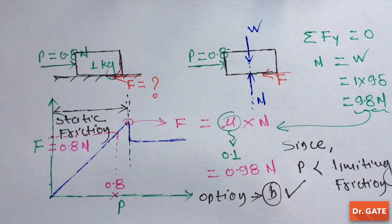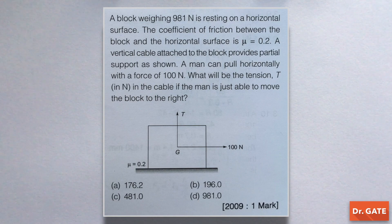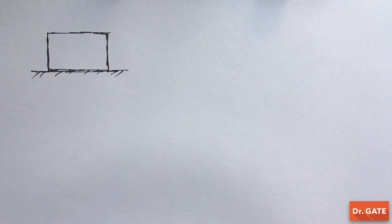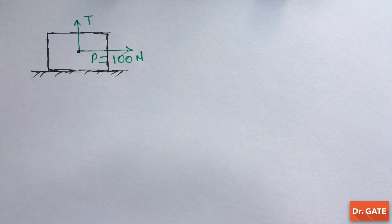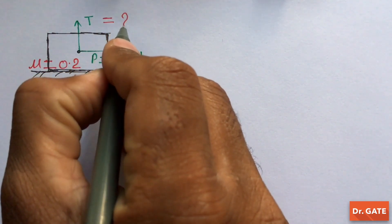Let's solve another numerical. A block weighing 91 N is resting on a horizontal surface. The coefficient of friction between the block and the surface is 0.2. A vertical cable attached to the block provides partial support as shown. A man can pull horizontally with a force of 100 N. We have to find the tension in the cable if the man is just able to move the block to the right. The external pulling force of 100 N acts horizontally, and the vertical tension through the cable acts upward.